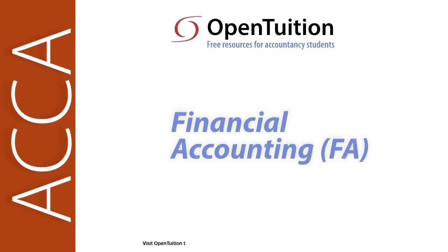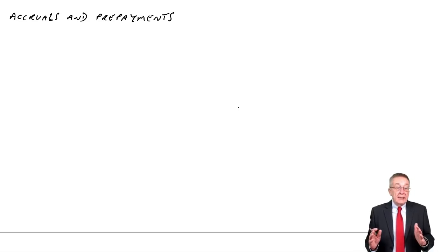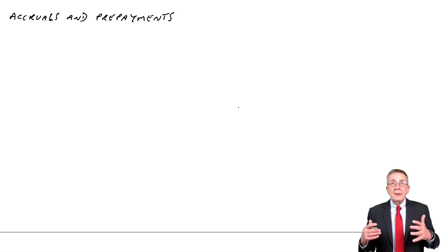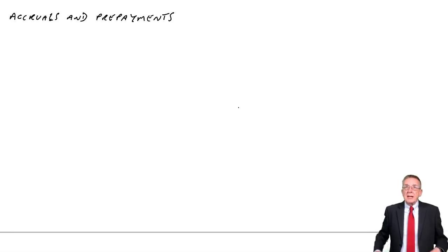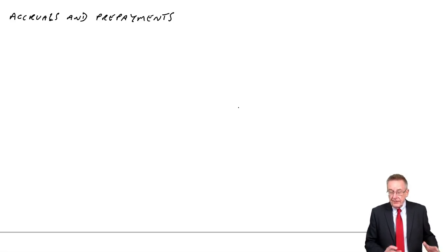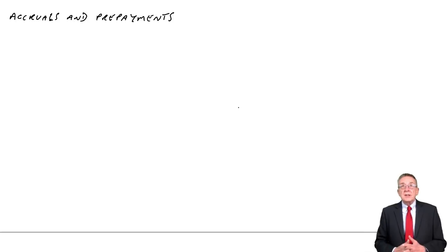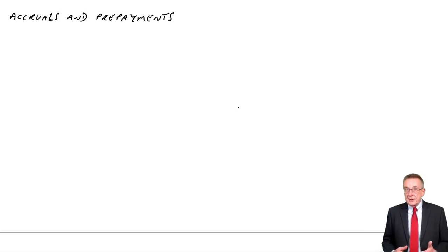This is a lecture from OpenTuition. To benefit from the lecture, you should download the free lecture notes from OpenTuition.com. At the end of the last lecture, I said when the accountant is preparing the financial statements, there are standardly four adjustments that need to be made. In this lecture, I'm going to go through the first of them, which is accruals and prepayments.